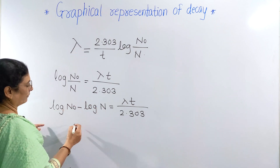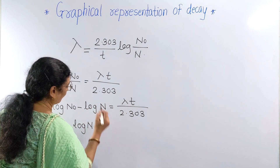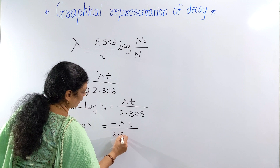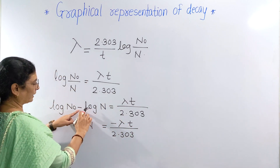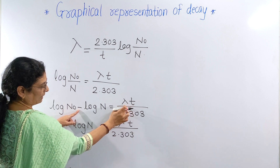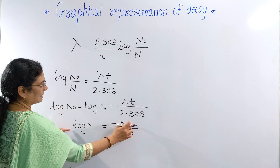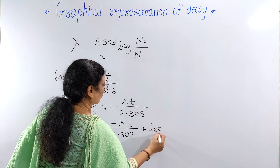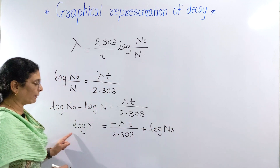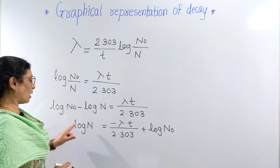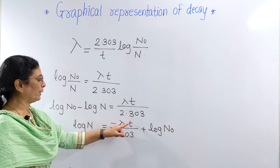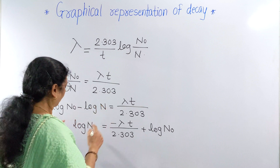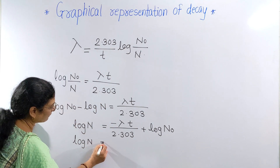Taking log of N₀ to the other side, you will have: minus lambda times t upon 2.303. Then log of N equals minus lambda times t upon 2.303 plus log of N₀. So we have the equation: log of N equals minus lambda times t upon 2.303 plus log of N₀.